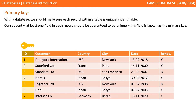In the database, we should make sure that each record within a table is uniquely identifiable. Consequently, there must be at least one field in each record that is guaranteed to be unique, and this field is known as the primary key.